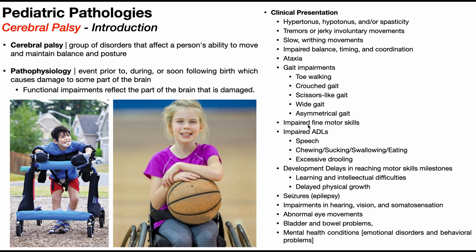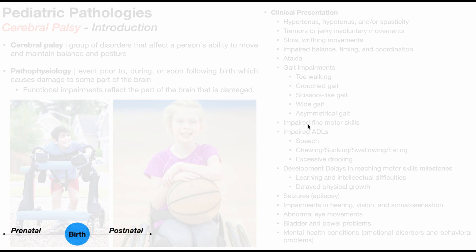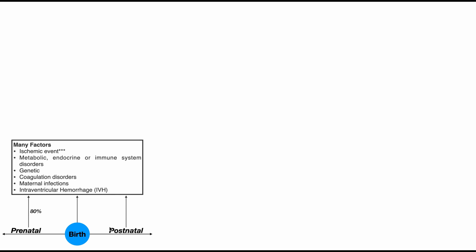So there's a huge variation in exactly how CP presents in each individual. There has to be some insult that occurs either prenatally, at birth, or pretty quickly after birth — postnatal. About 80% of cerebral palsy cases occur prenatally. It can be caused by an ischemic event, something that would basically mimic a stroke in utero, which was thought to be the cause of almost every case before. But there are many other newly discovered causes of cerebral palsy.